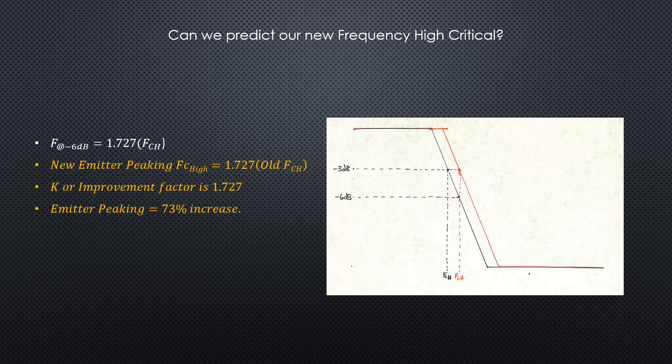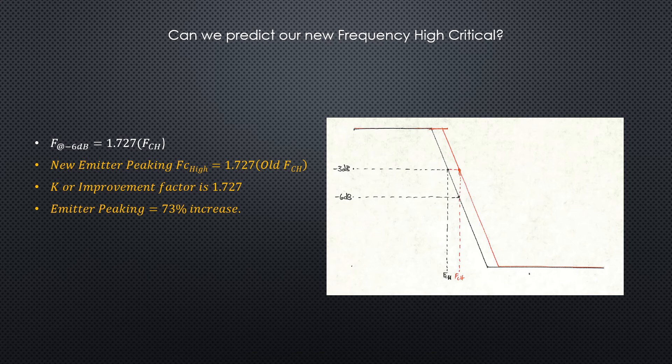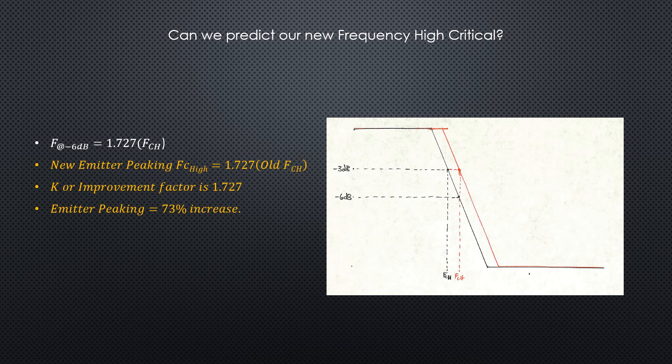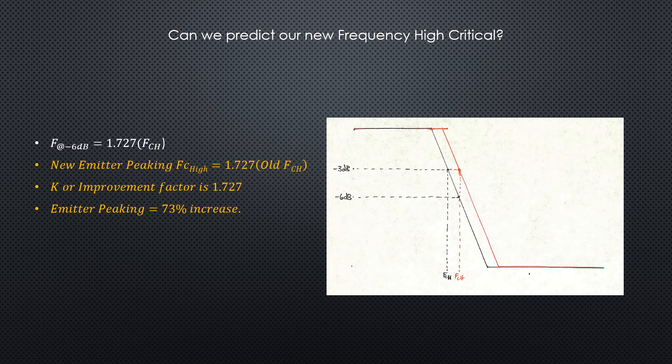Now sometimes this is referred to as the k or improvement factor—so we've improved our bandwidth by a factor of 1.727. Or you could also say with emitter peaking we've got a 73 percent increase in bandwidth.